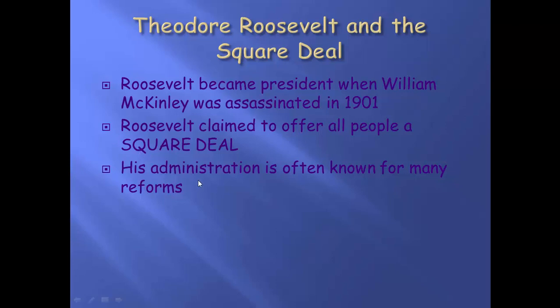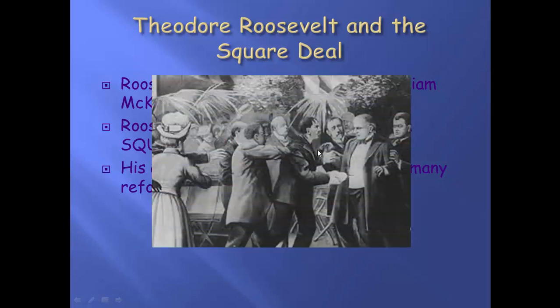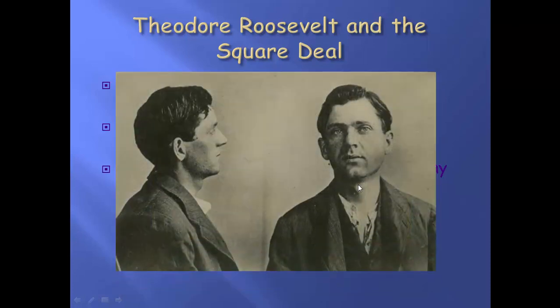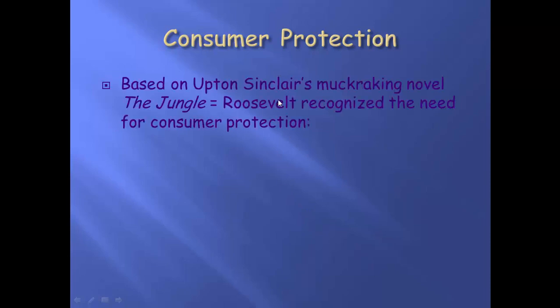His administration is really known for the many reforms that took place. We're going to deal with consumer protection first. This is a picture of William McKinley getting shot by Leon Czolgosz, who was an anarchist. They caught him and he went to jail — that's a story for another time. So let's deal with consumer protection.